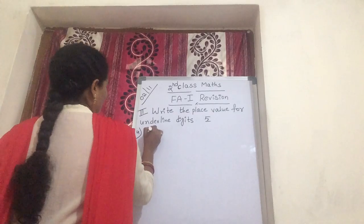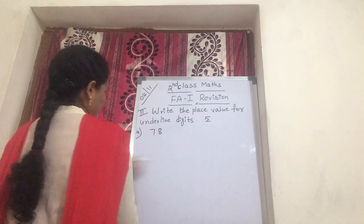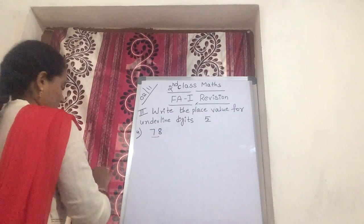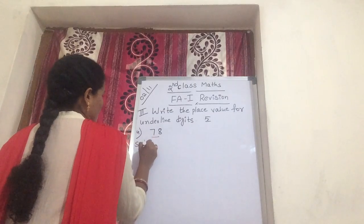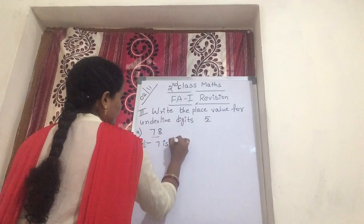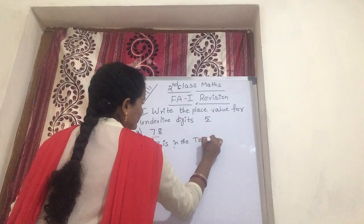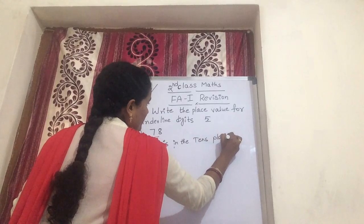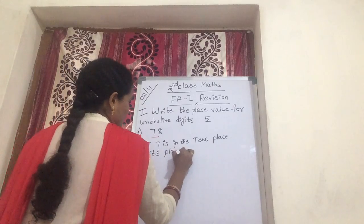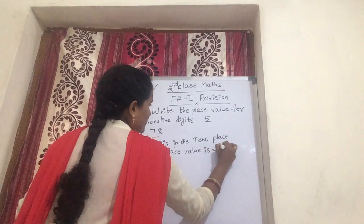Now fourth one: 470, underline on 7. What is the solution? 7 is in the tens place, so its place value is 70.